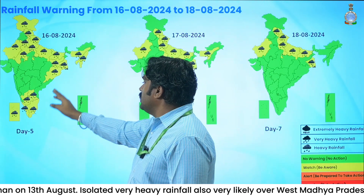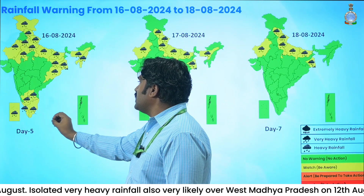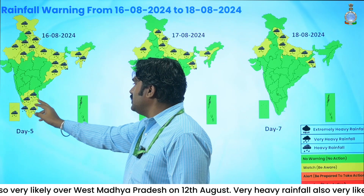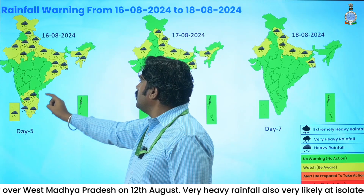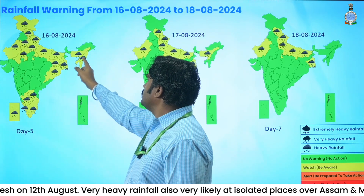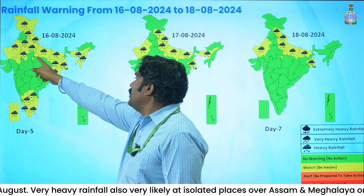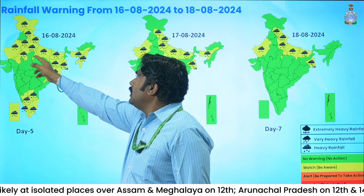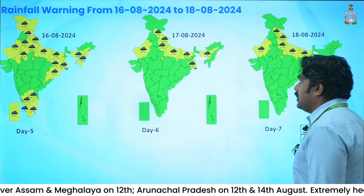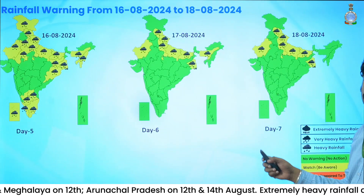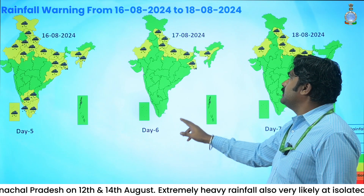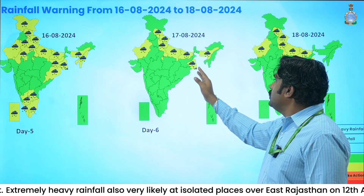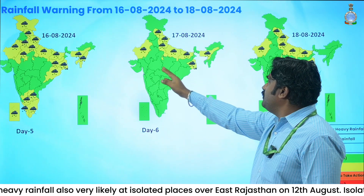Heavy rainfall warnings have been issued over many places including the southern states, Odisha, eastern states, Rajasthan, Uttar Pradesh, Jammu and Kashmir, Himachal Pradesh, and Uttarakhand. For the Day 6 forecast valid for 17th August, there is no adverse warning given for the southern country except heavy rainfall warnings.